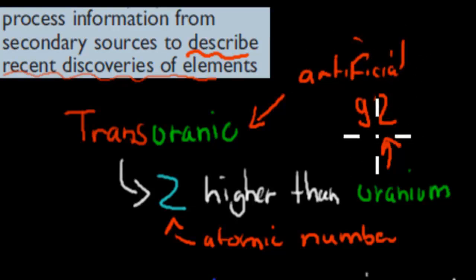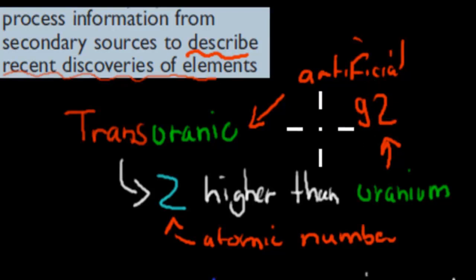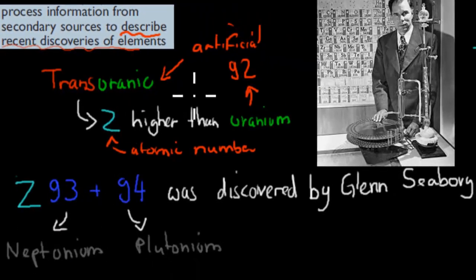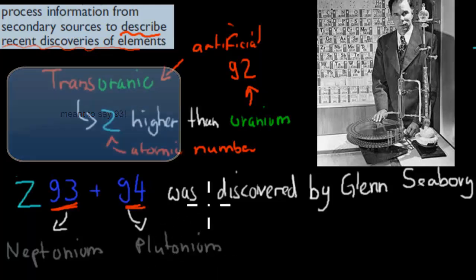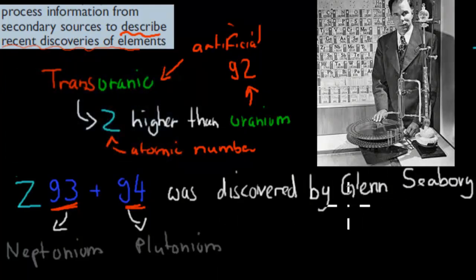Now I'll go through the order of how they got discovered and who discovered them as well, if there are important names to remember. So first, we've got the very first transuranic elements, which are 93, which is neptunium, and 94, which is plutonium, was discovered by Glenn Seaborg. Now this name might be good to remember. This is Glenn Seaborg right here. And he was an American scientist, and he and his team worked in California for the University of Berkeley, I believe.